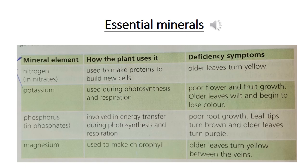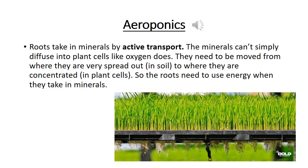Potassium deficiency symptoms include poor flower and fruit growth, and older leaves begin to lose color. Phosphorus is involved in energy transfer during photosynthesis and respiration. Its deficiency symptoms include poor root growth, leaves turning brown, and older leaves turning purple. Magnesium is used to make chlorophyll, and its deficiency symptom is older leaves turning yellow between the veins.